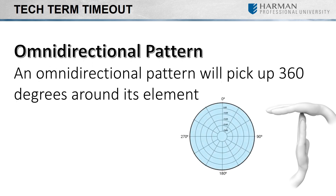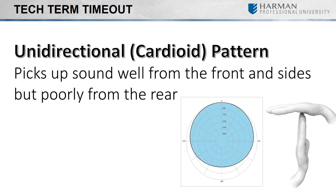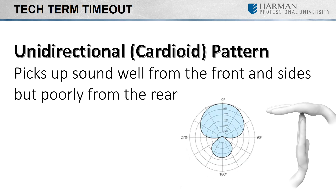Omnidirectional polar patterns allow a microphone to pick up sound from all directions. The term unidirectional is a broad term encapsulating a few different polar patterns. Unidirectional microphones pick up sound from a single point of entry, but that single point can vary from very wide to extremely narrow. Within this family of pickup patterns, there exists the following: cardioid, subcardioid, supercardioid, and hypercardioid.